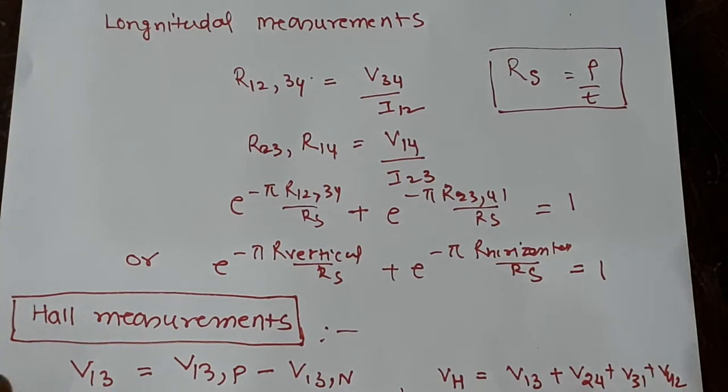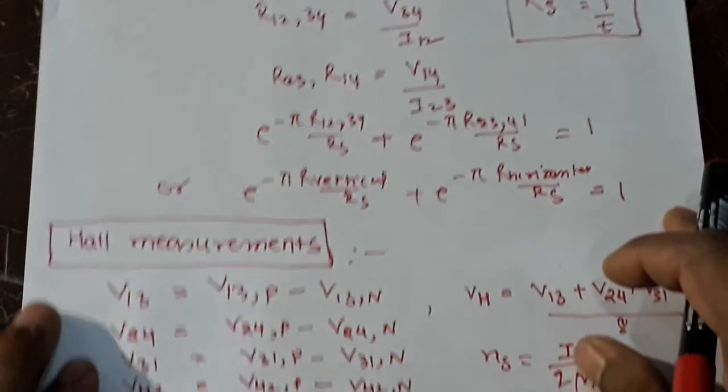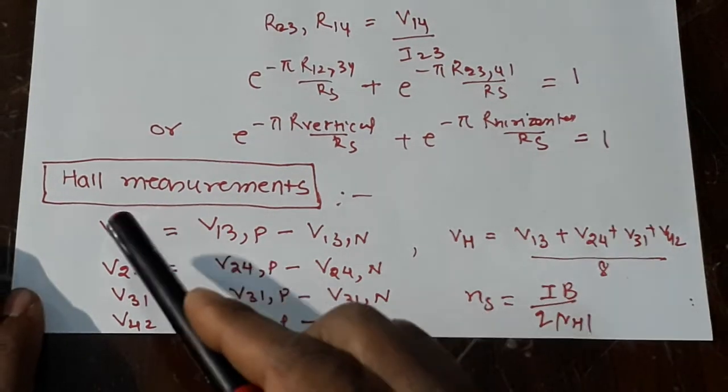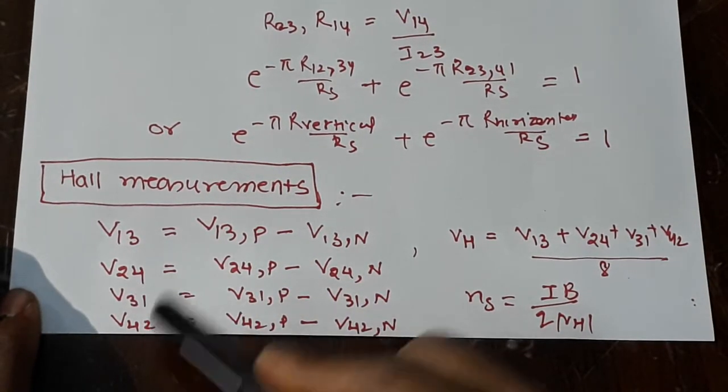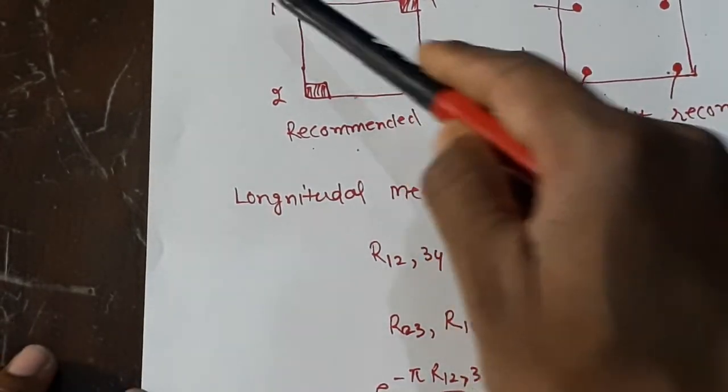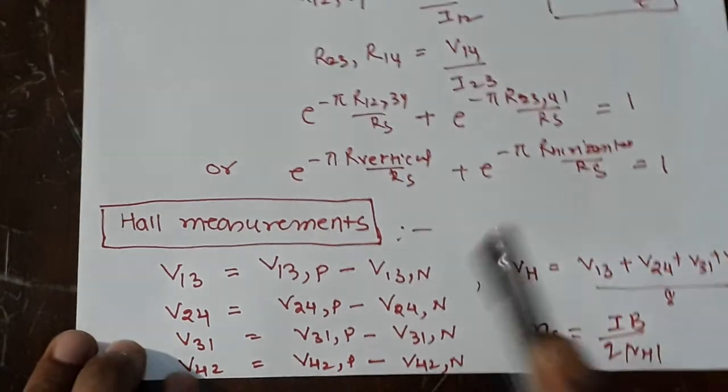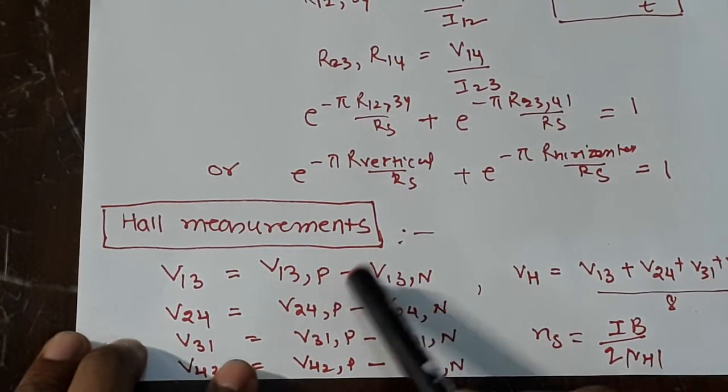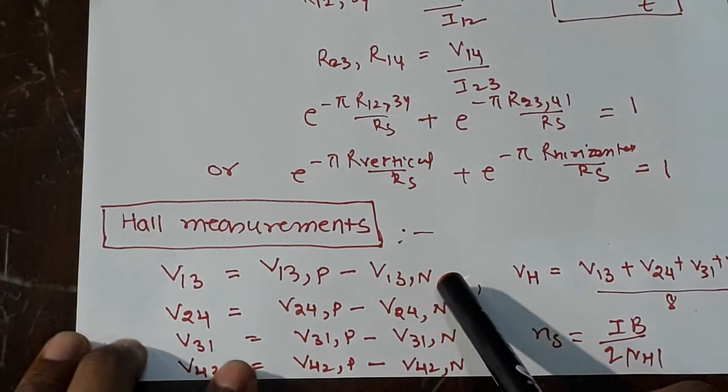The Hall measurement is really tricky. You have to do four measurements to get one Hall data. You measure 1-3, 2-4, 3-1, 4-2. It's always diagonal. The way it's done: to get V13 exactly, you take V13 in positive magnetic field minus V13 in negative magnetic field.